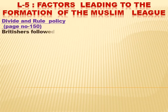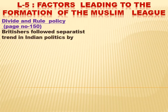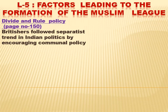We will start with the first topic: the divide and rule policy. What happened is that the Britishers felt that if the Indians were united on the basis of religion, they would not be able to rule over them. So they followed a separatist policy in Indian politics by encouraging a communal policy of divide and rule. They thought it is better to divide them and then rule over them — 'divide and rule' was the main motive. This divide and rule policy seed was sown after the revolt of 1857 and is now bearing fruit in the form of the Muslim League.